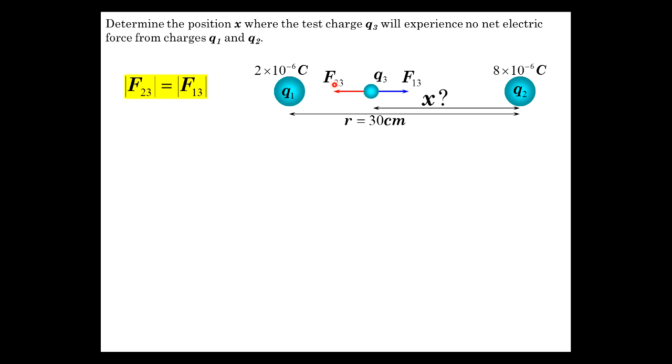We want to make F of 2 on 3, the force of this one on this, equal the force of 1 on 3. Let's set that up with Coulomb's Law. KQ2 Q3 over X squared, that's this force here, is going to be equal to KQ1 Q3 over (R minus X) quantity squared. K's go away, Q3's go away. Simplifies to Q2 over X squared is Q1 over R minus X squared.